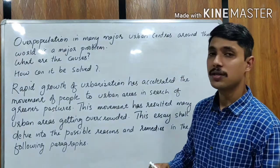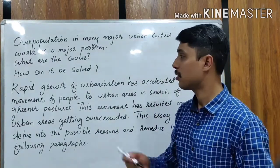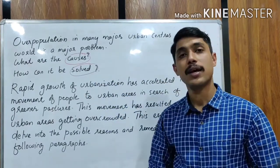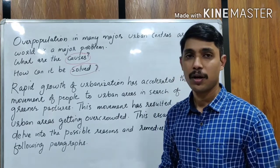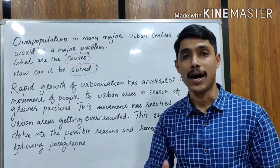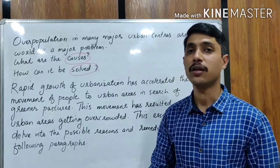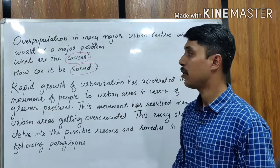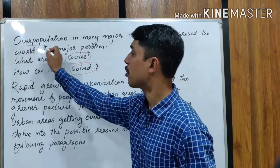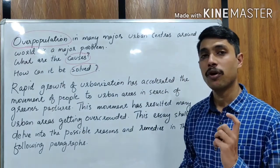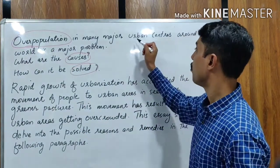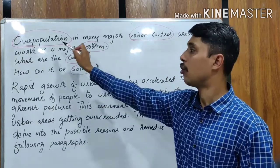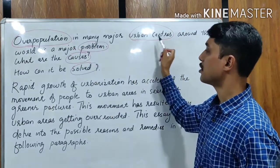The question is asking about two main things: causes and solutions. So this essay is a discussion essay — your opinion is not asked. Instead, you are told to explain two main things: causes and solutions. The problem here is overpopulation in major urban centers. The main keywords are overpopulation, urban centers, and problem.